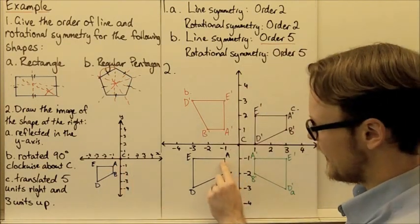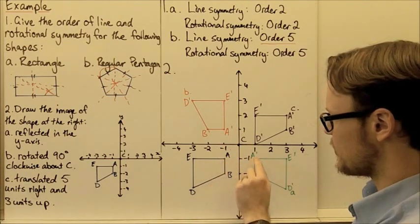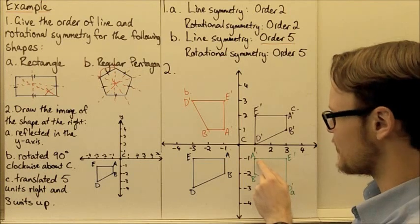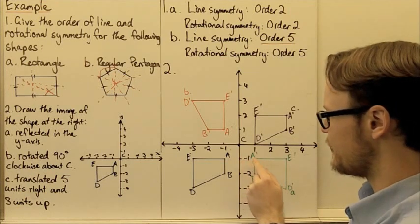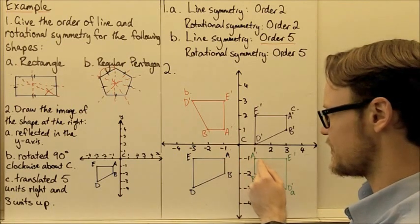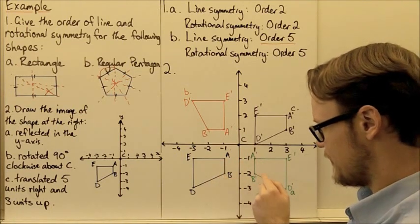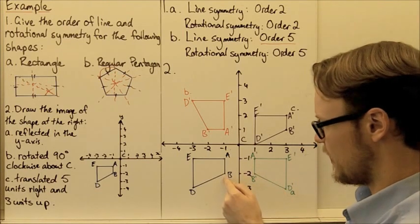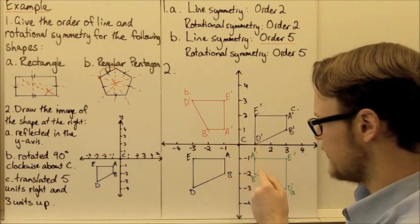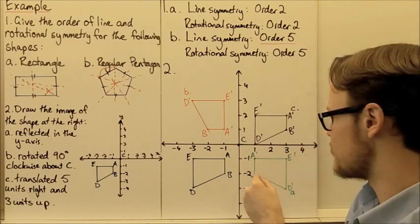So if A is here at negative 1, negative 1, then A dash — the image of A — is at positive 1, negative 1. The x value has just become positive. For B at negative 1, negative 2, it becomes positive 1, negative 2. So it's only the x value that's changing.